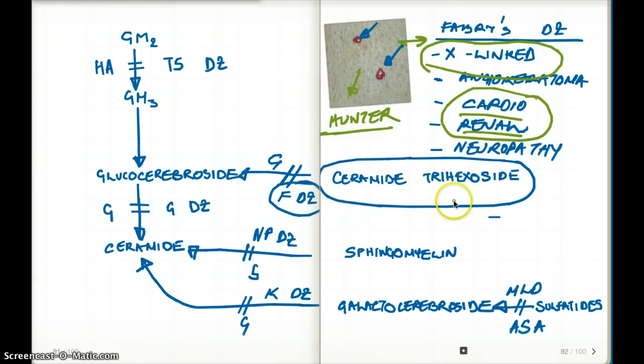Sometimes we forget which substance accumulates and only focus on deficient enzymes. This is a memory question. The substrate accumulating is ceramide trihexacide. The deficient enzyme is galactosidase, which normally would break down ceramide trihexacide, but this doesn't happen due to the deficiency.